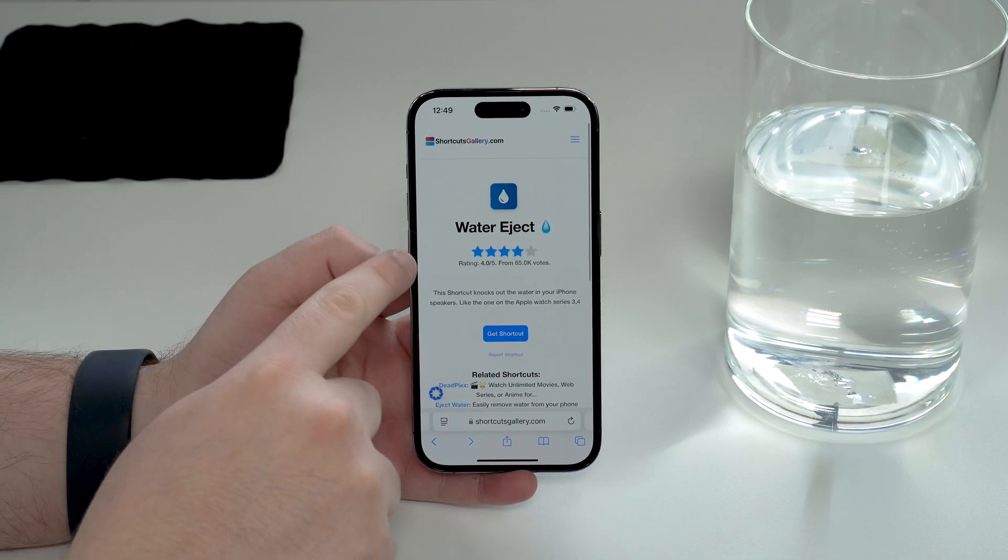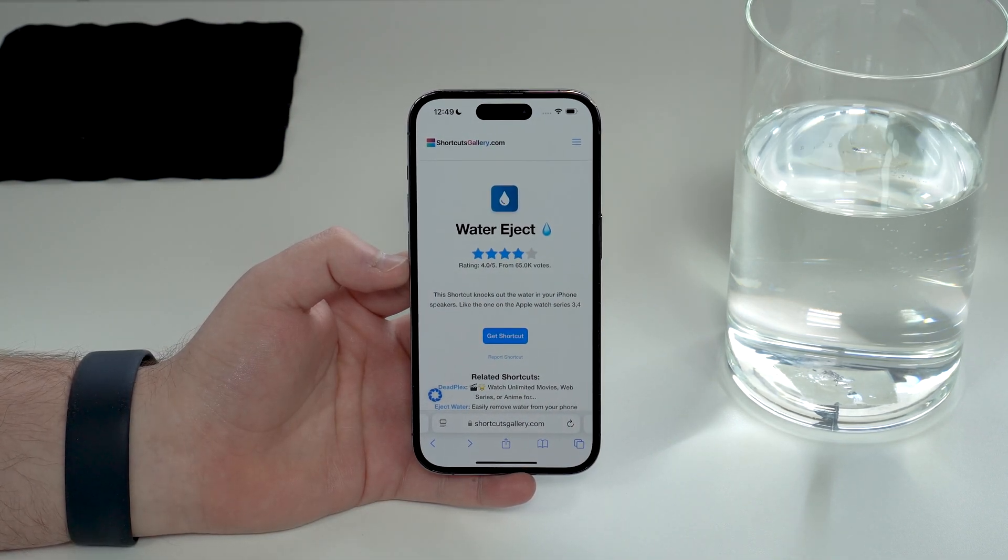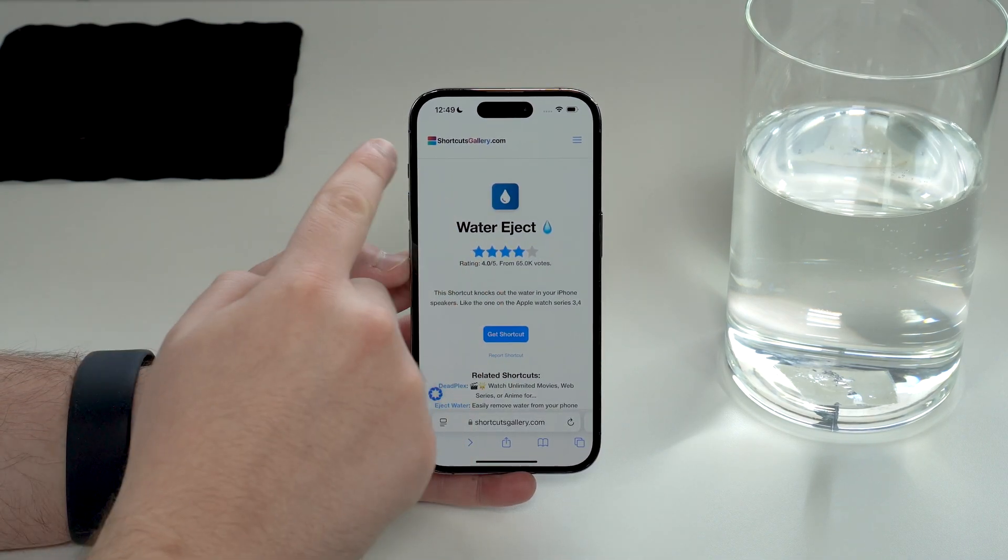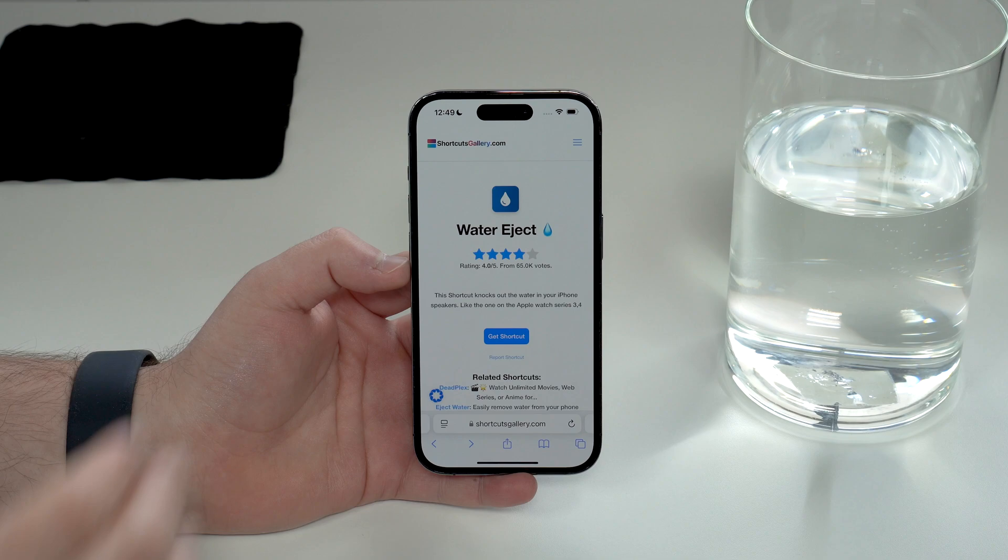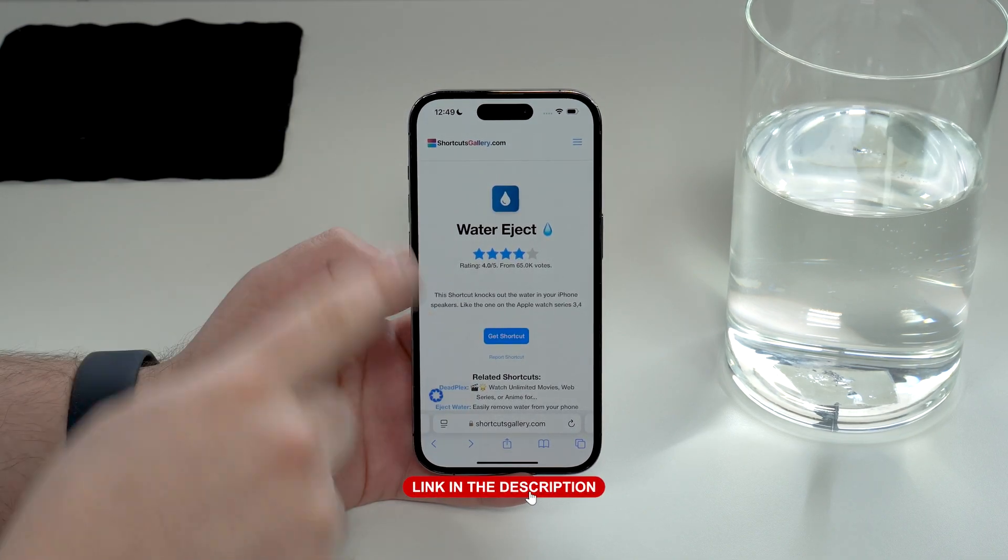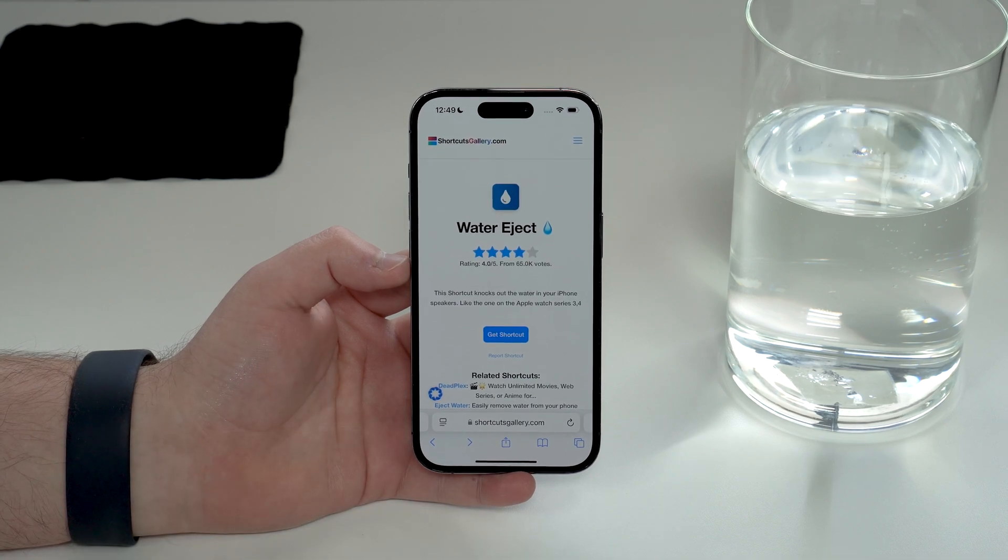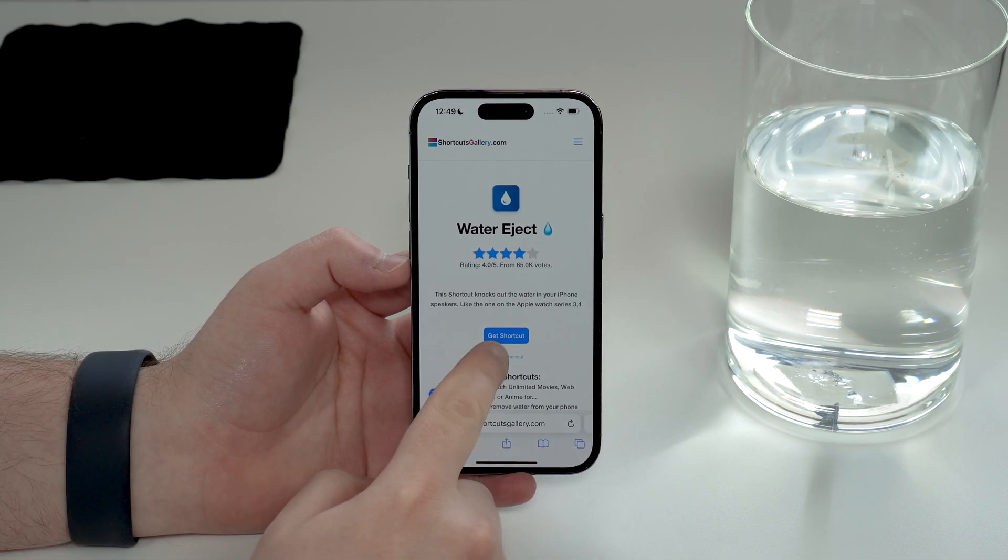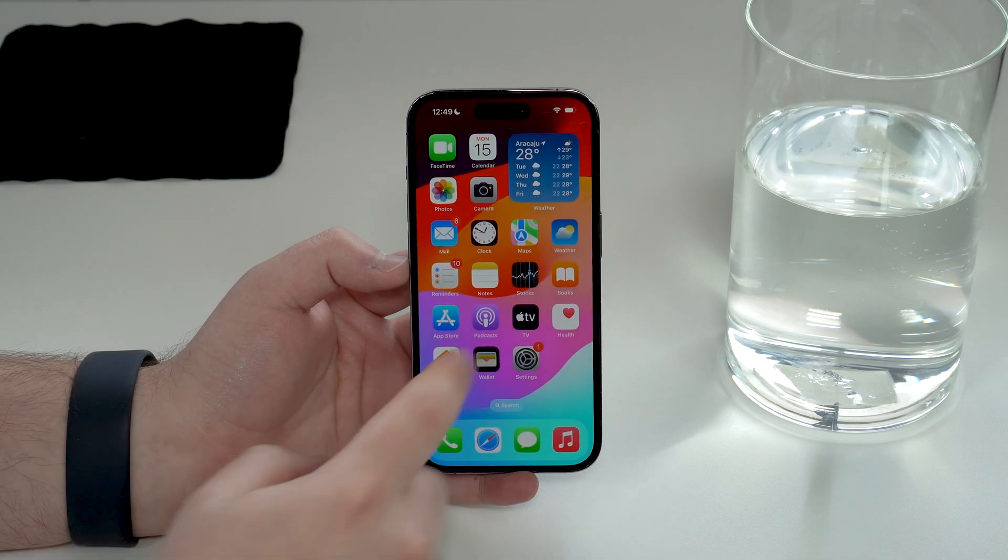Of course I'm going to have a direct link to this page in the description down below. So open it up and you will open this page. You can go ahead and tap on get shortcut. One thing to keep in mind is that you will naturally need to have the shortcuts app on your iPhone. This is a native pre-installed Apple application but sometimes some people delete it, so just make sure you have it on your iPhone.